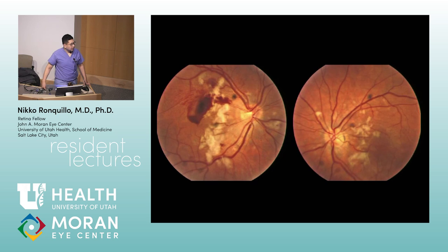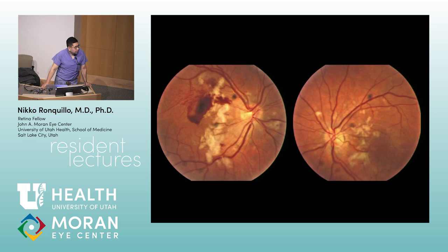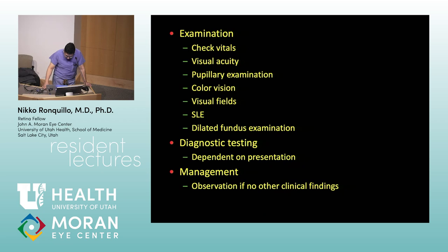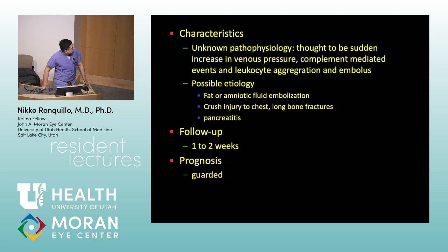Next — Purtscher's syndrome. The mechanism is release of cytokines and complement activation from crush injury — complement is the buzzword. Causes include pancreatitis (the big one), trauma to long bones, fat embolism, and amniotic embolism. You see lots of cotton wool spots, white retinal patches, and pre-retinal hemorrhage. The case scenario: fat or amniotic fluid embolization, crush injury to the chest, long bone fractures, or pancreatitis.